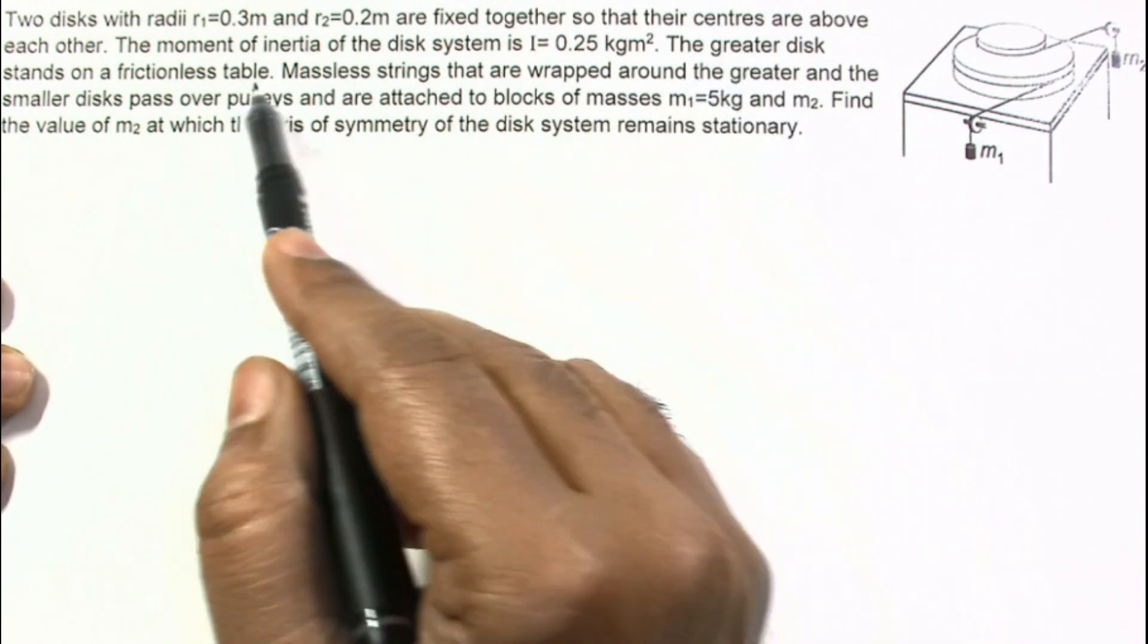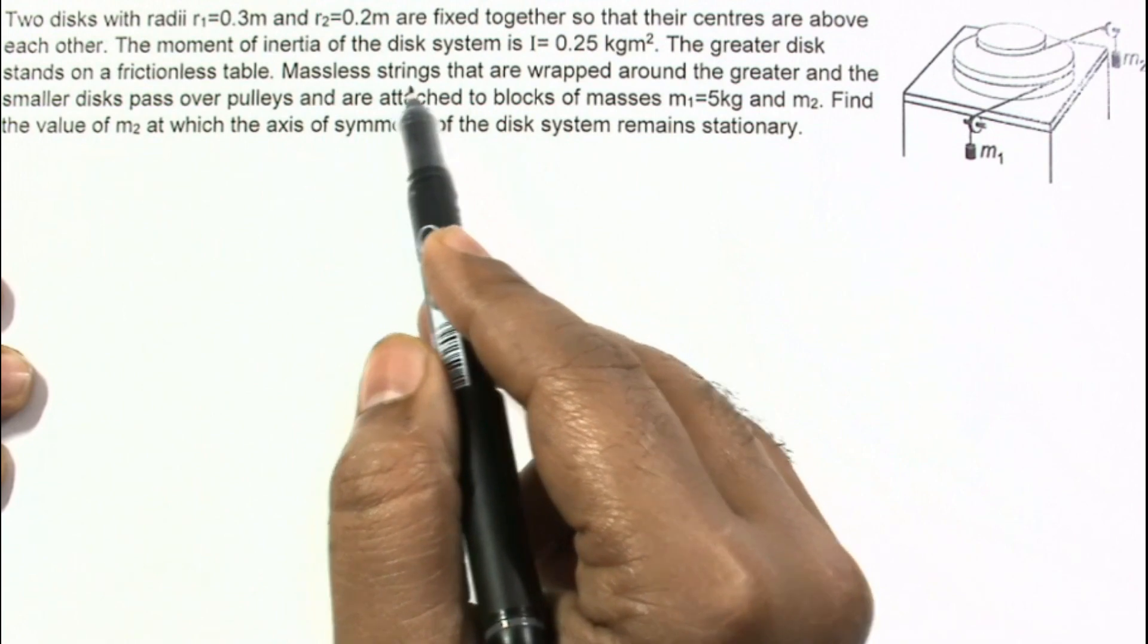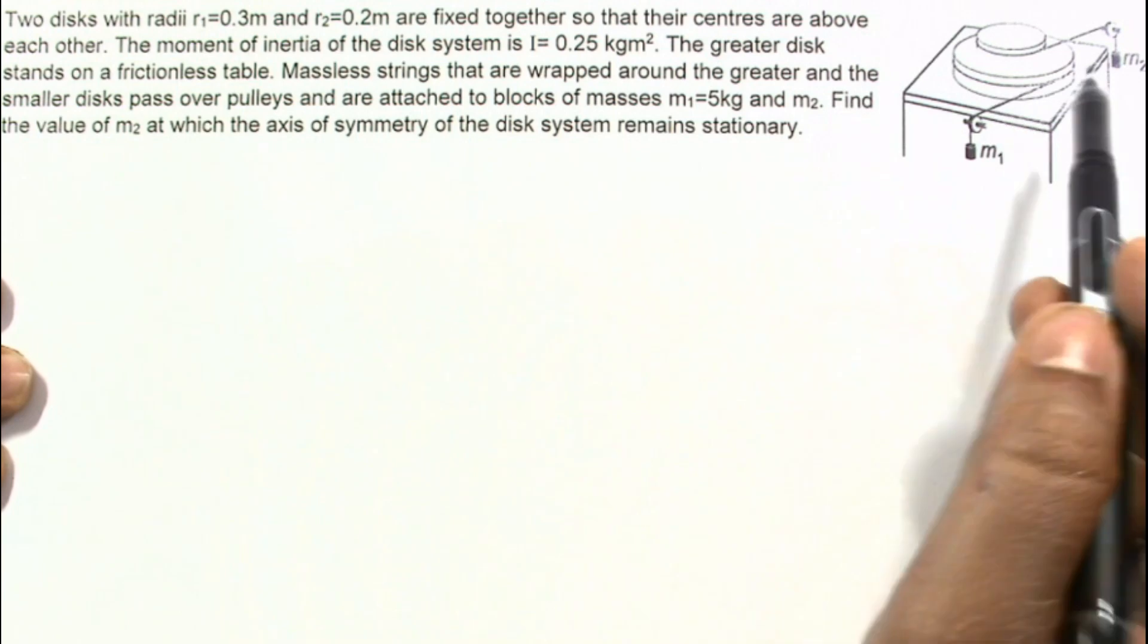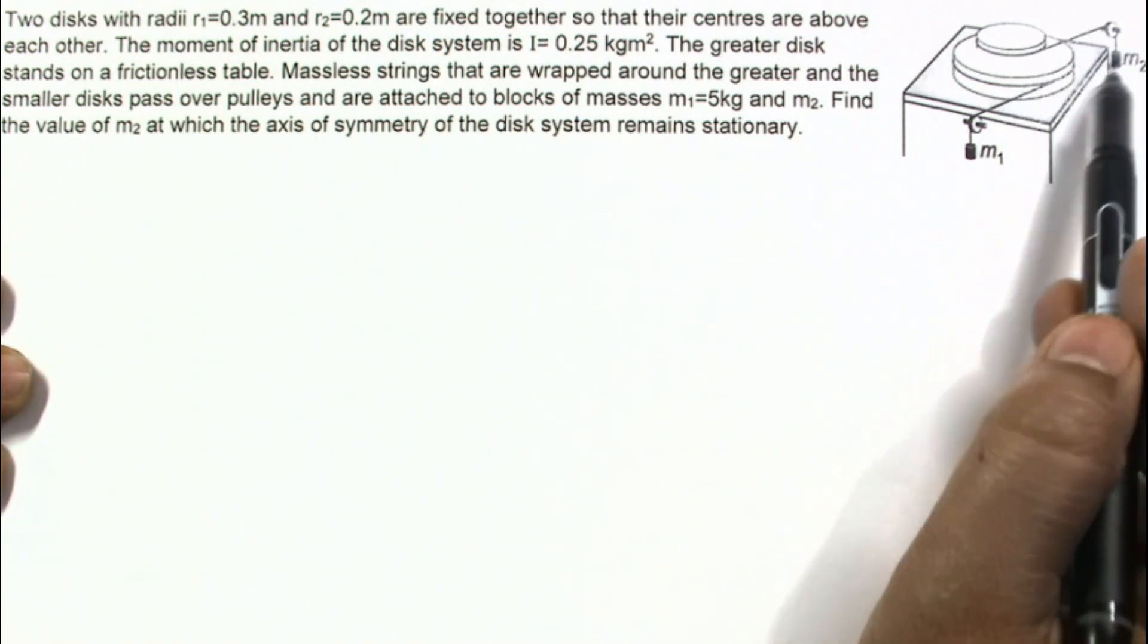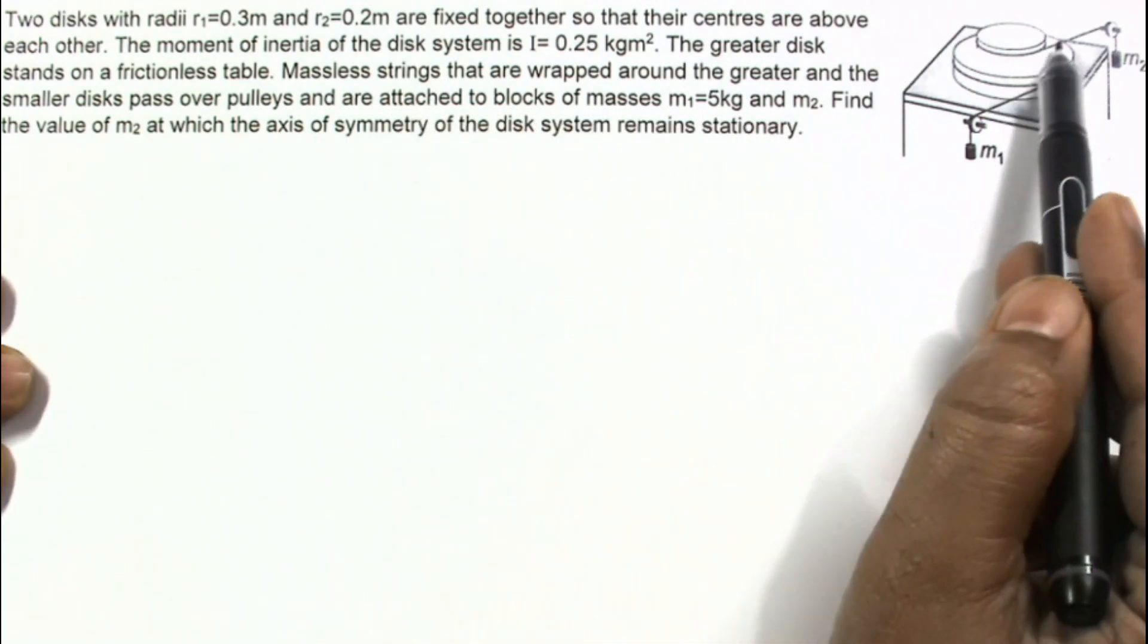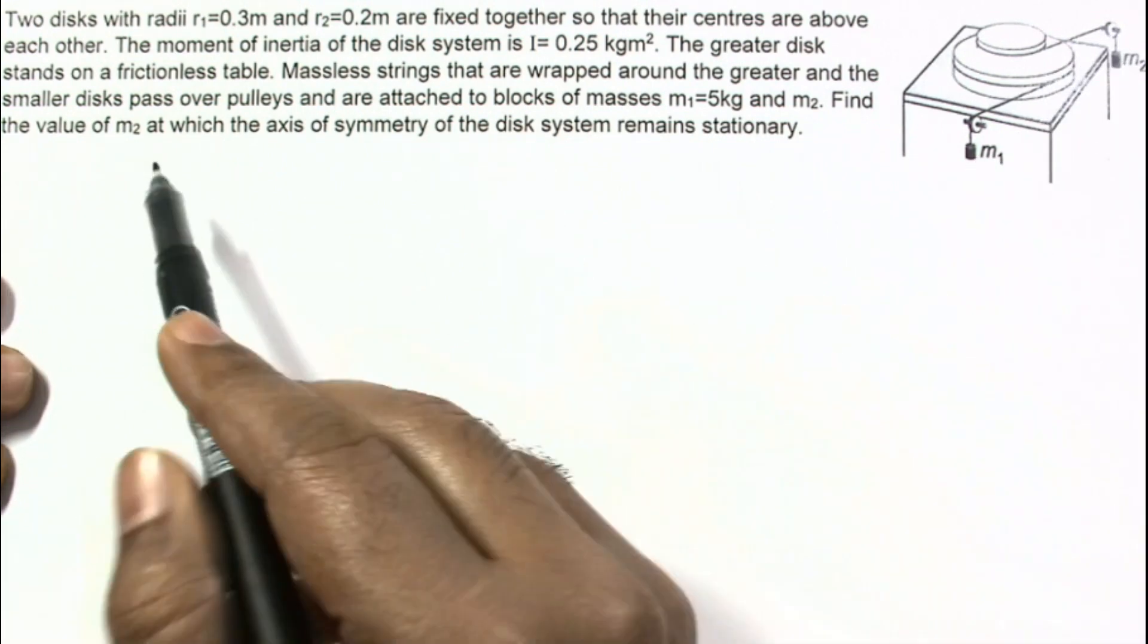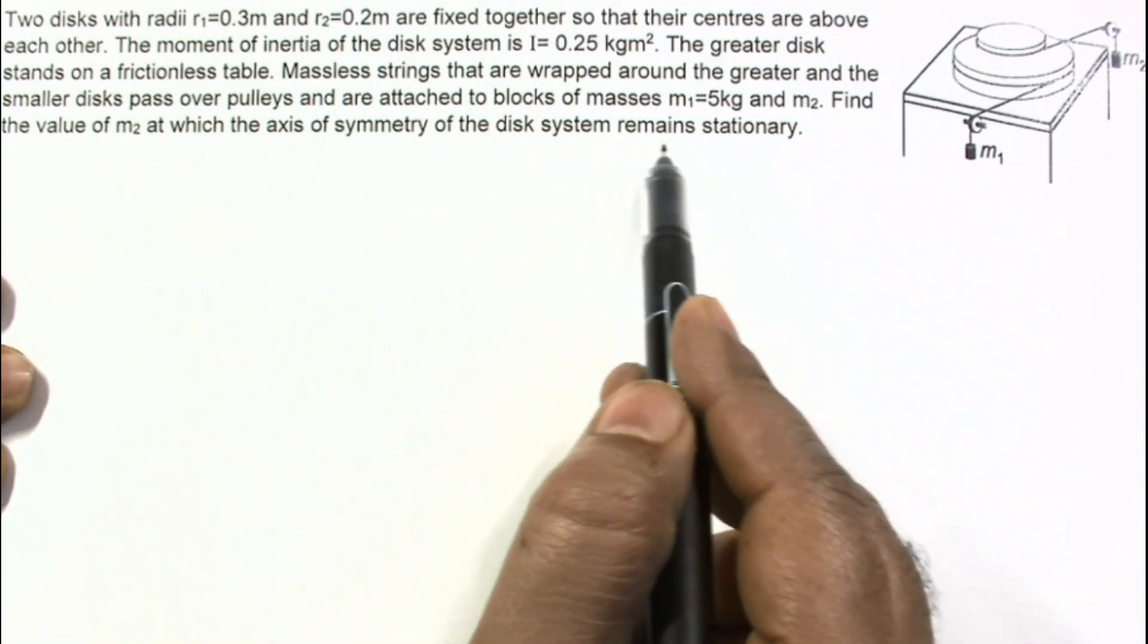The greater disc stands on a frictionless table. Massless strings are wrapped around the greater and the smaller disc and pass over pulleys. These strings are attached to blocks of masses M1 and M2. Find the value of M2 at which the axis of symmetry of the disc system remains stationary.